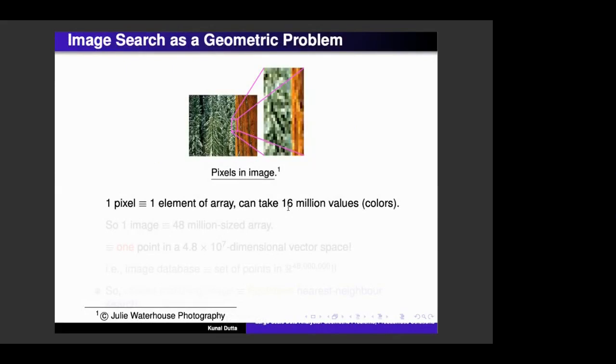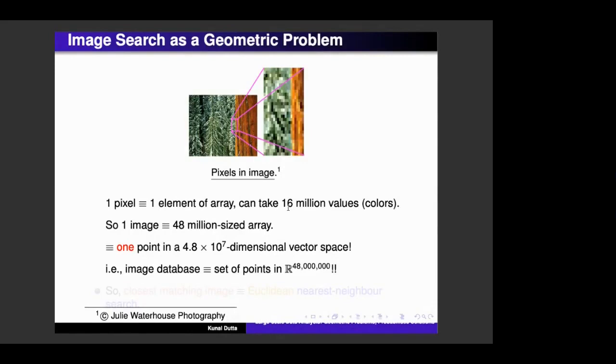Okay, so every pixel of the image, it can take, so let's say the image is true color. So every pixel can take 16 million values, which means that your image becomes a 48 million sized array. And this means that it becomes a point in a 48 million dimensional vector space, right. And now your image database, therefore, is a set of points in this very high dimensional vector space.